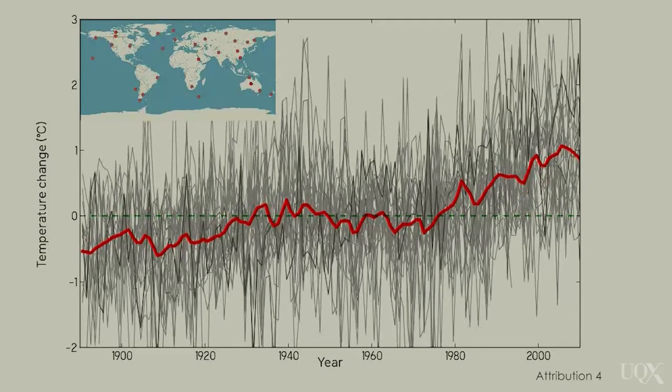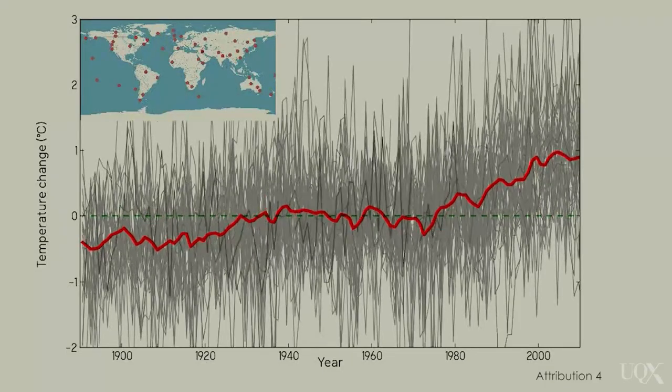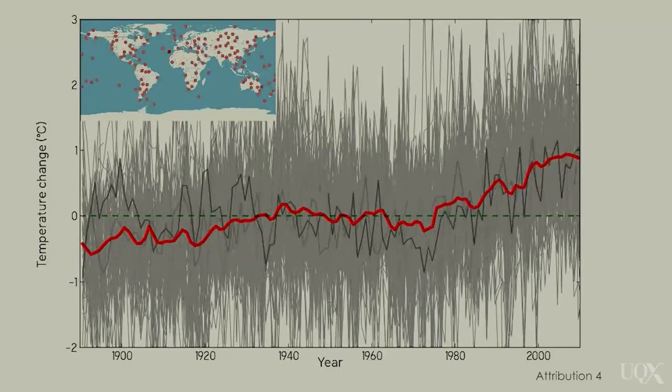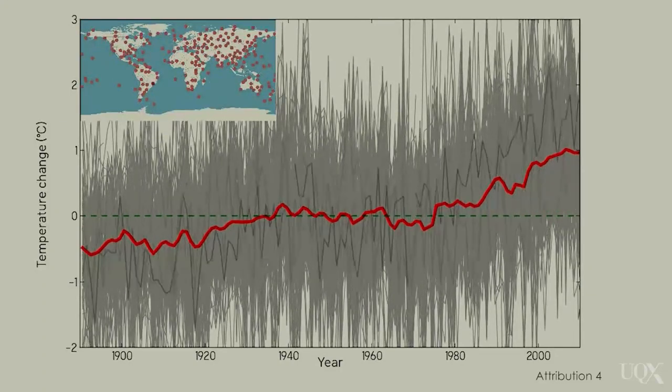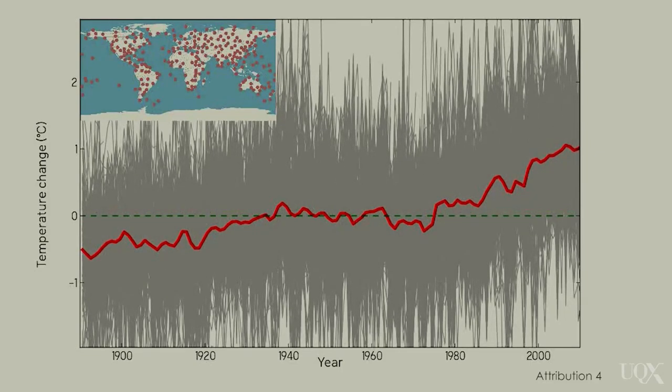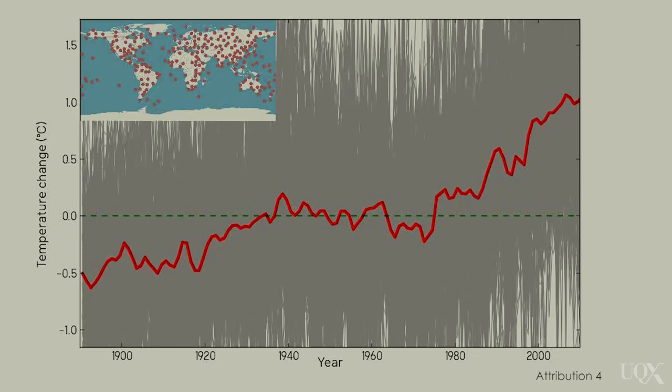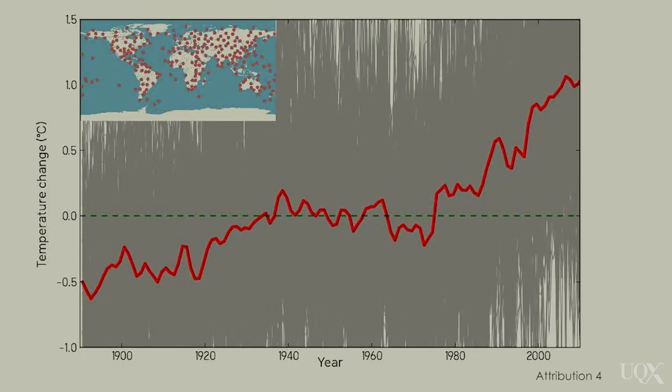If we combine weather records from many locations around the world, we get an estimate of global temperature change and now the warming pattern is clear. It's hard to see what is going on if we look at just one place. But if we look at the whole planet, we see a clear pattern of warming.